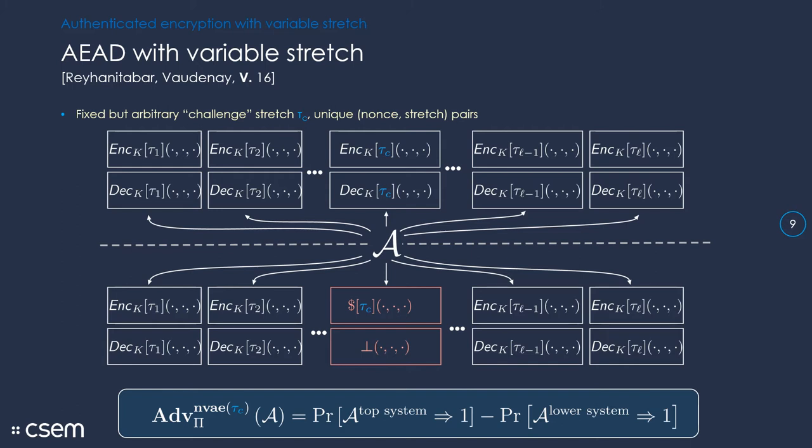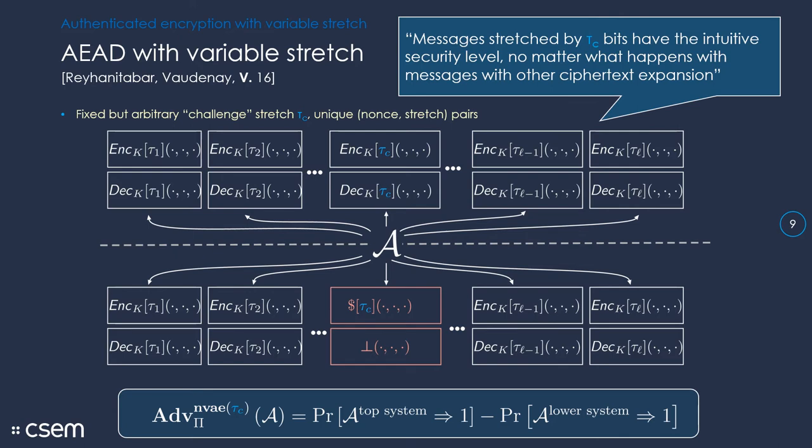Here in the real world, the adversary has access to encryption and decryption oracles using the same key for every tag length that is allowed for the given AEAD scheme. Then in the ideal world, we select one tag length. It's fixed but arbitrary. So it's a parameter of the notion really. And we replace the encryption and decryption oracles with the same idealized version as in the basic notion. And what this really captures is that no matter what happens with other tag lengths, for example, short tags could be already forged by the attacker, this has no bearing on the security for messages that are treated with the target tag length tau c.